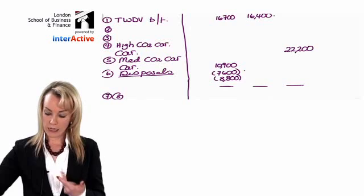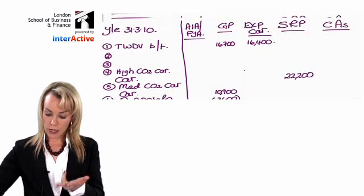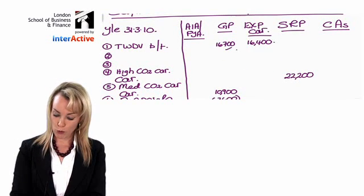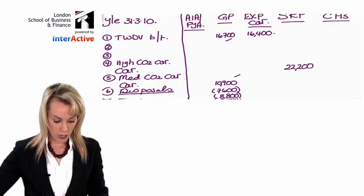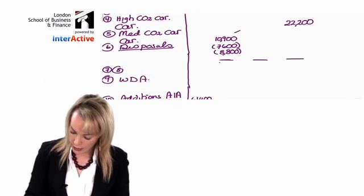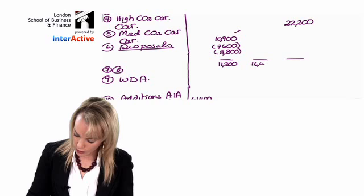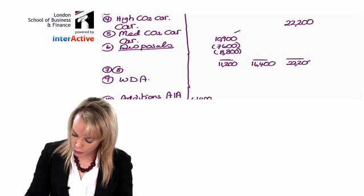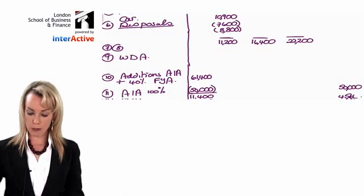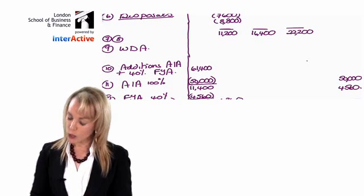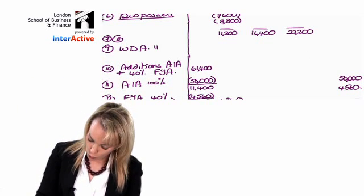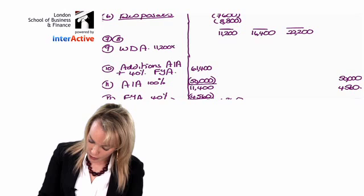To do that you add down each of your columns. Adding all these numbers down, you should get a positive figure in the general pool of 11,240, 16,400 in the expensive car brought forward column, and 20,200 in the special rate pool. Now we need to work out the WDA.